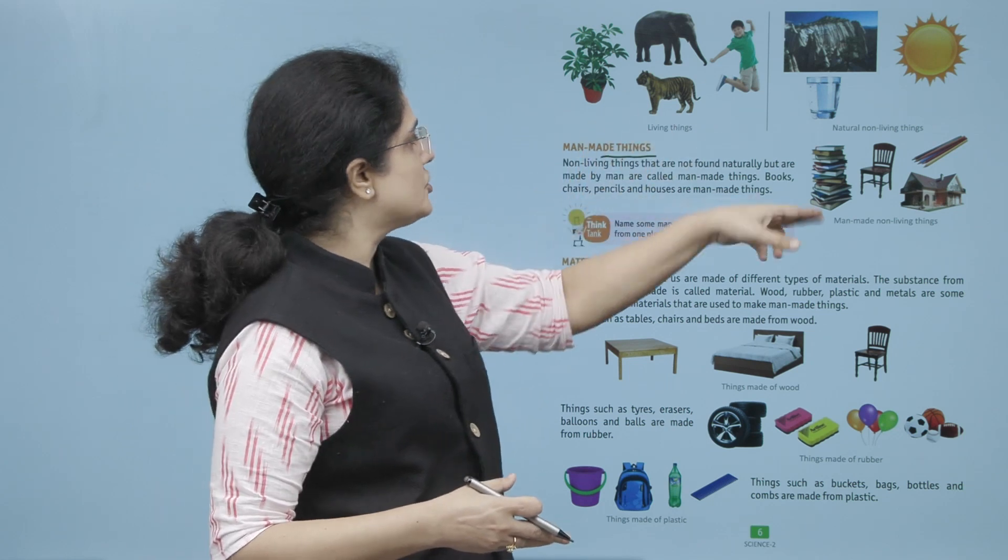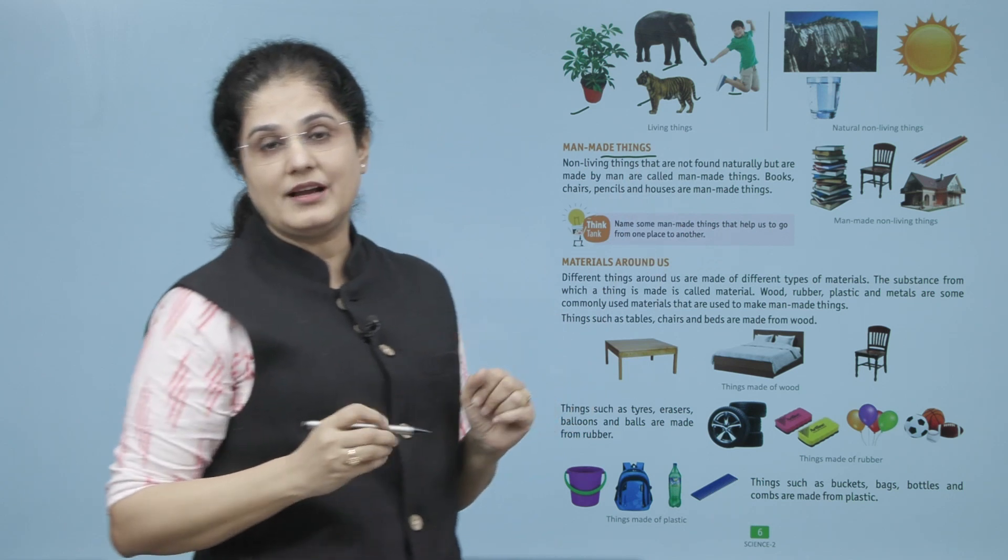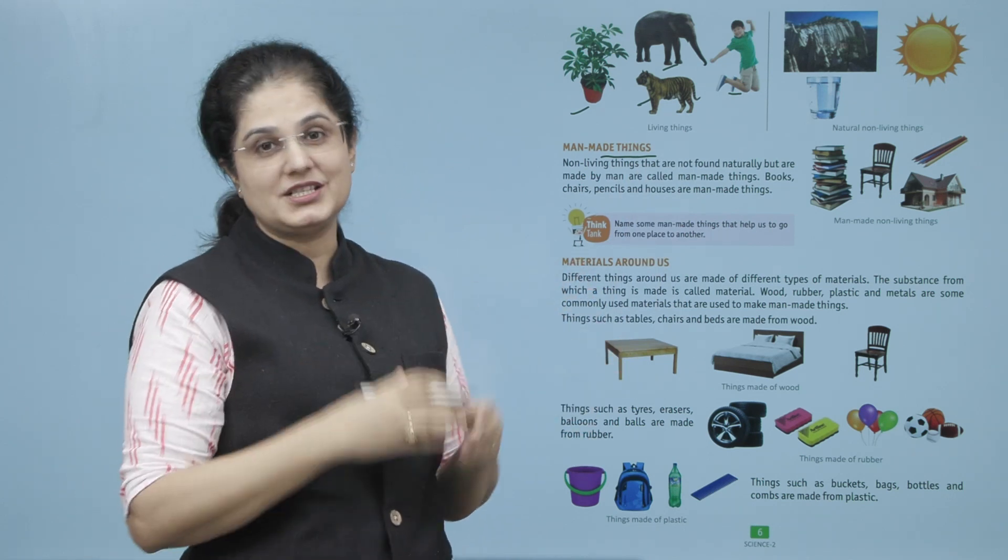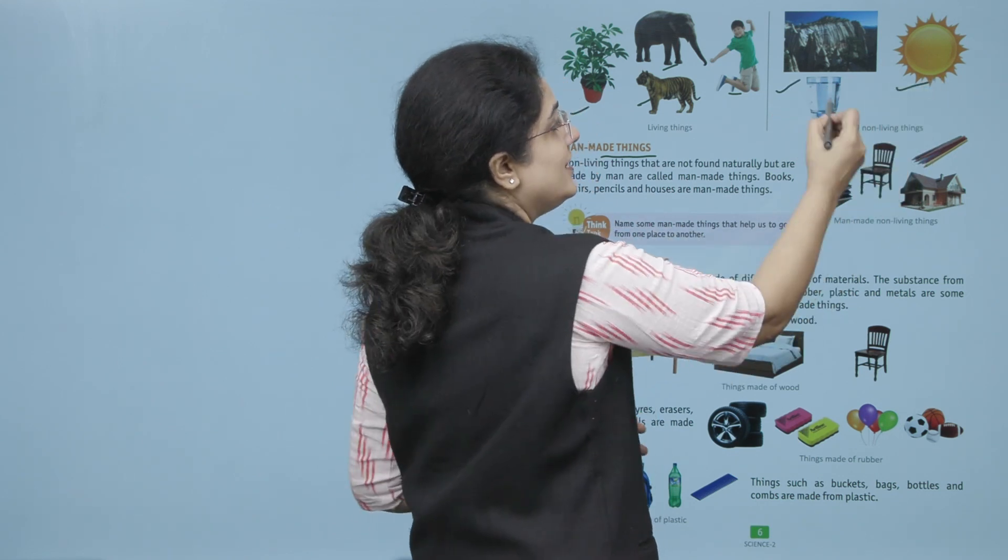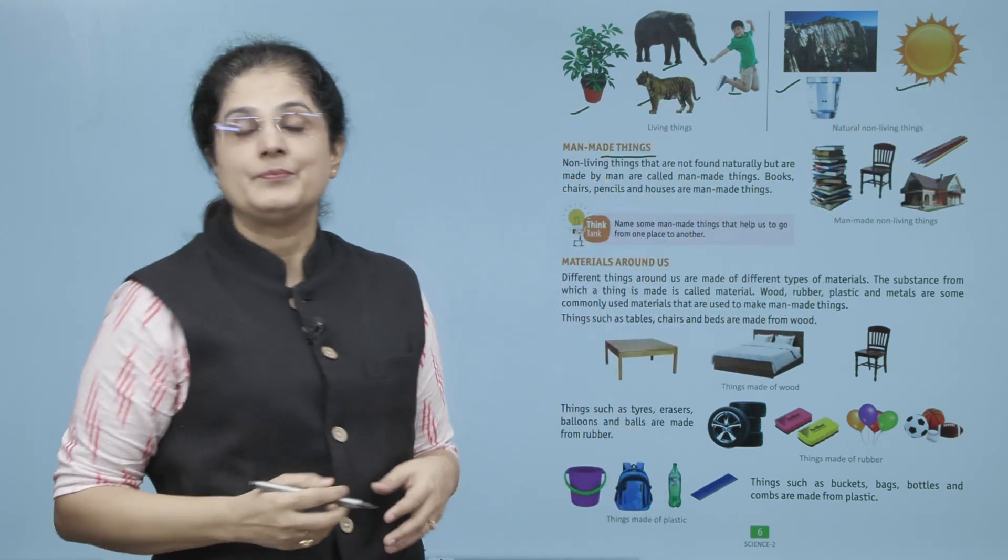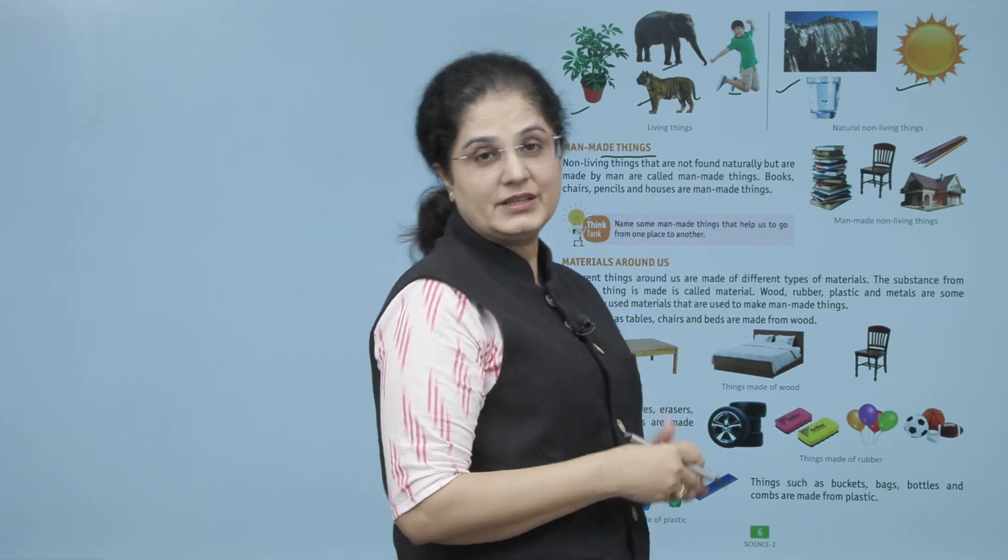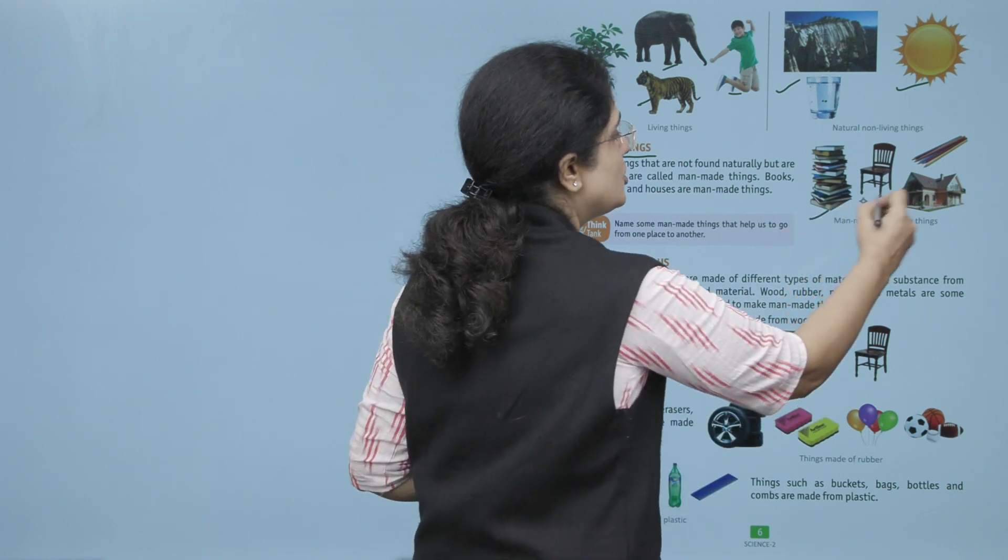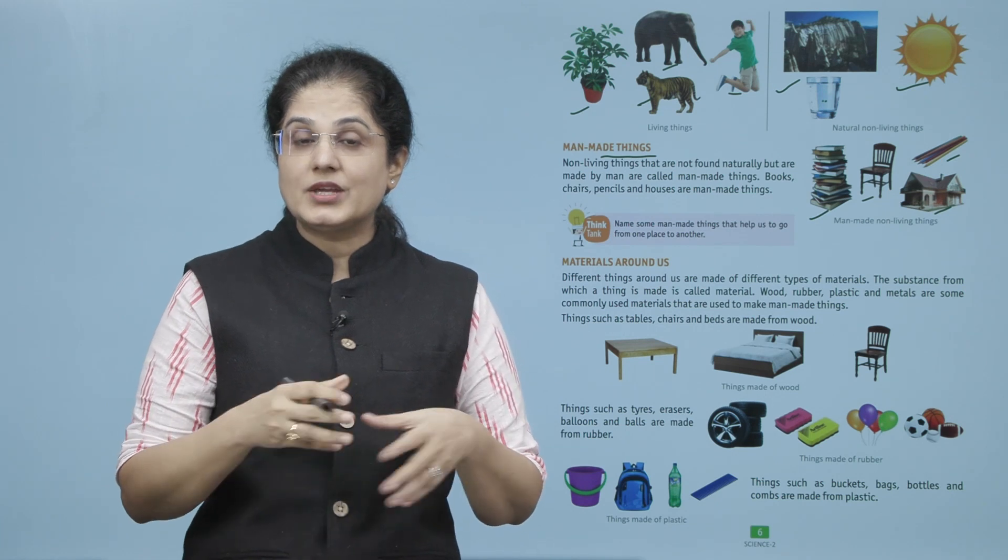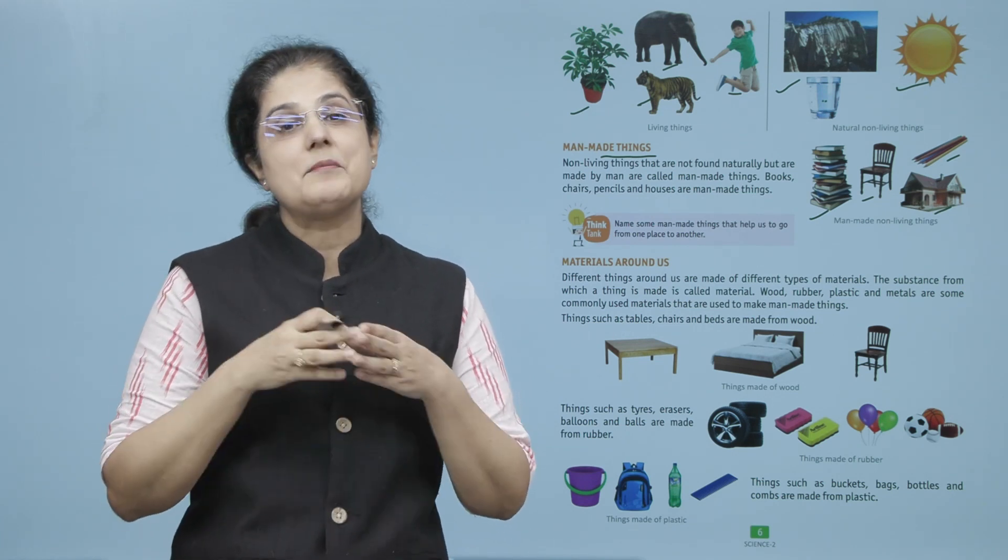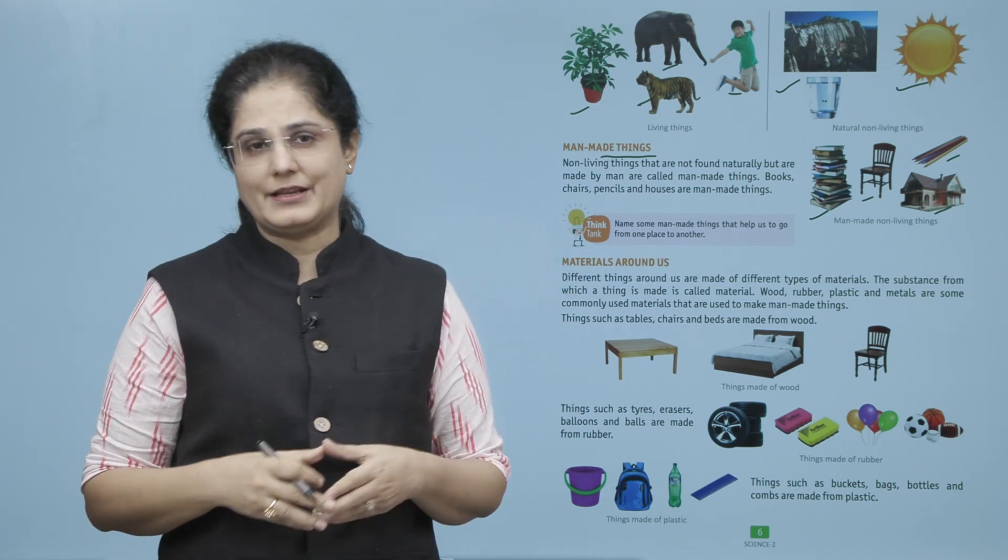Jo chizein jinki insaan bana ta hai jo nature se humein jaise ki hai nahi milti, unhe man-made things kaha jata hai. Agar aap in pictures ko dekhe, to ye paudhe, janwar, yeh insaan, yeh sab kya hai? Yeh natural living cheeze hain. Aur agar aap yaha pe dekhe, yeh pathar, yeh suraj, glass ke under ka pani, yeh natural non-living cheeze hain. Agar aap is picture mein dekhenge, to yeh books, chair, ghar, ya yeh pencils, yeh sari non-living cheeze hain jo ki insaan ne banai hain, toh inhe man-made things kaha jata hai.